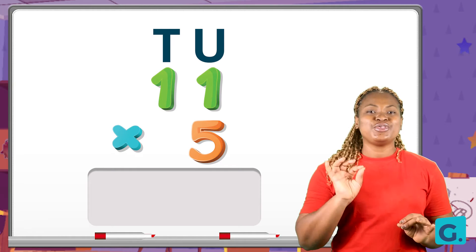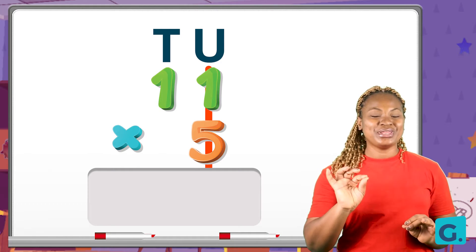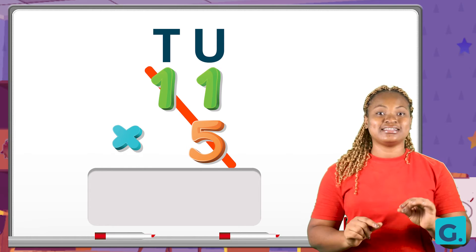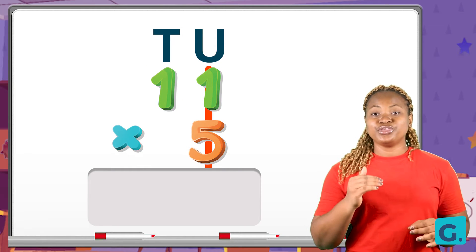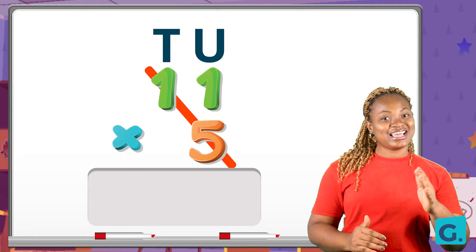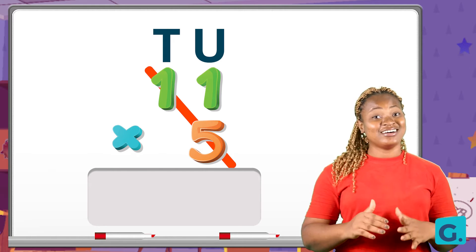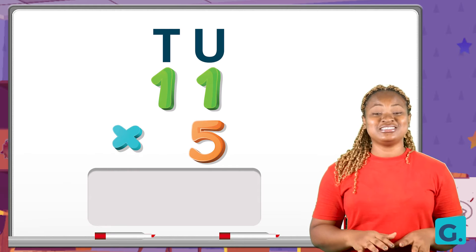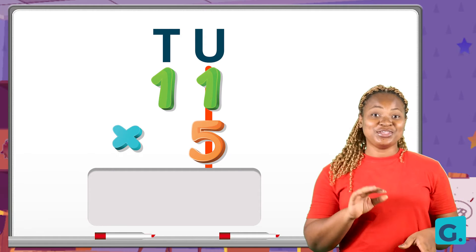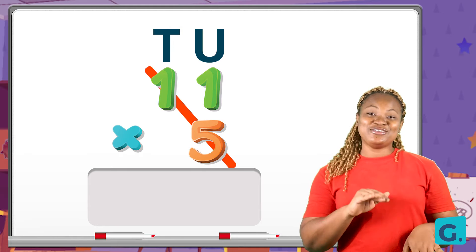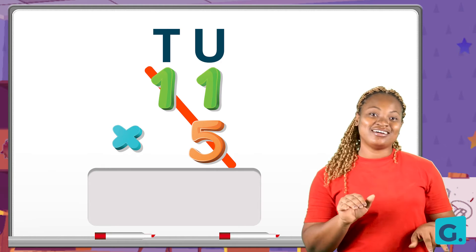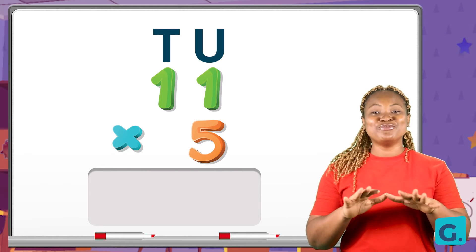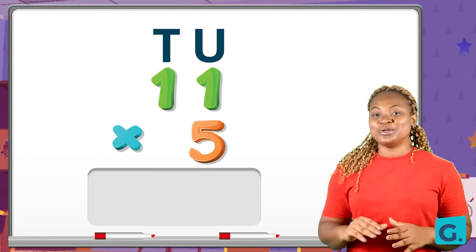Now, when you arrange numbers like this, you make sure you multiply the units and units together before multiplying the units and the tens. So we go: unit times unit, unit times tens — that's how the order goes. Can you say that after me? When you want to multiply a two-digit number by a one-digit number, we go: unit times unit, unit times tens — that's how the order goes.